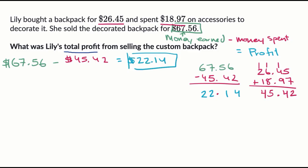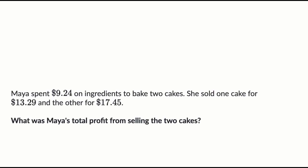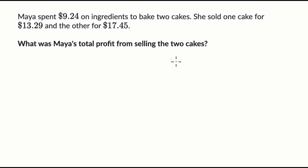Let's do one more example. Maya spent $9.24 on ingredients to bake two cakes. She sold one cake for $13.29 and the other for $17.45. What was the total profit from selling the two cakes? You could pause this video and have a go at that.